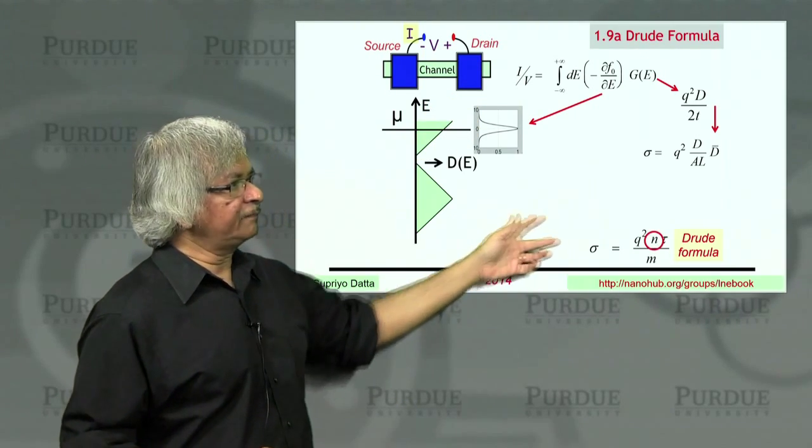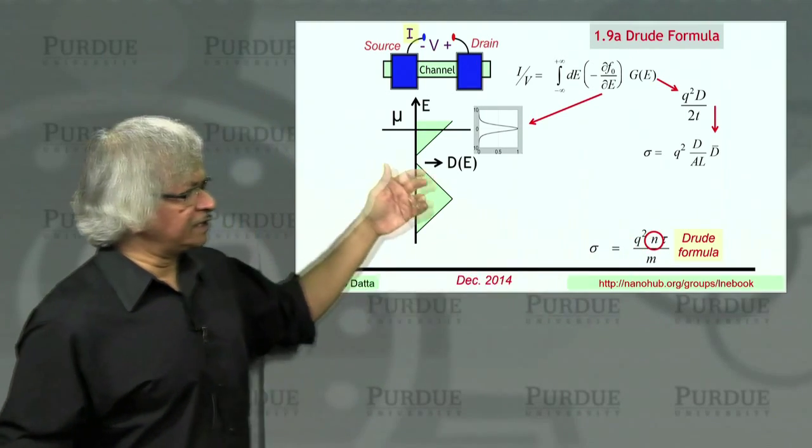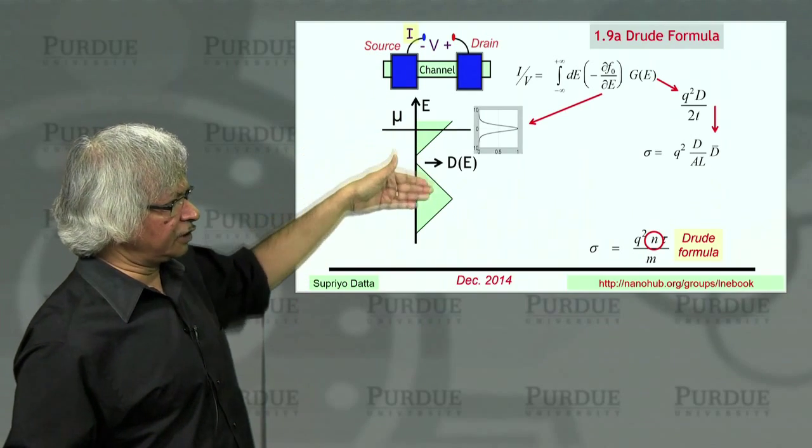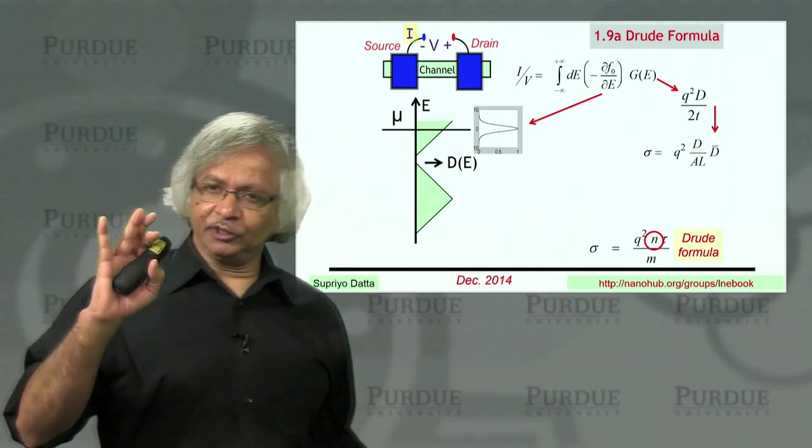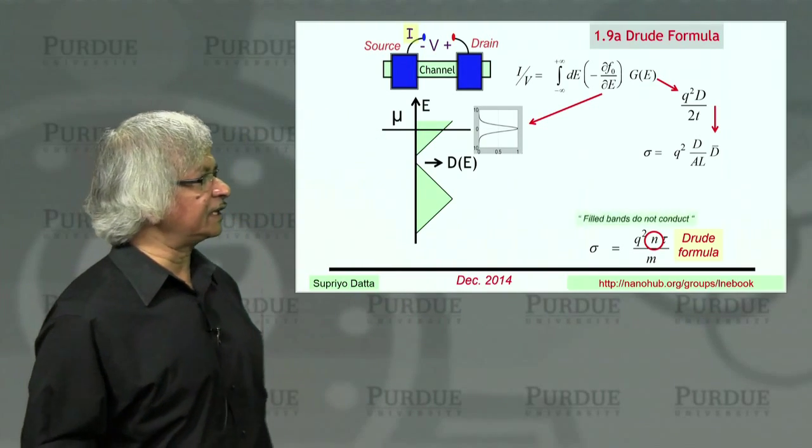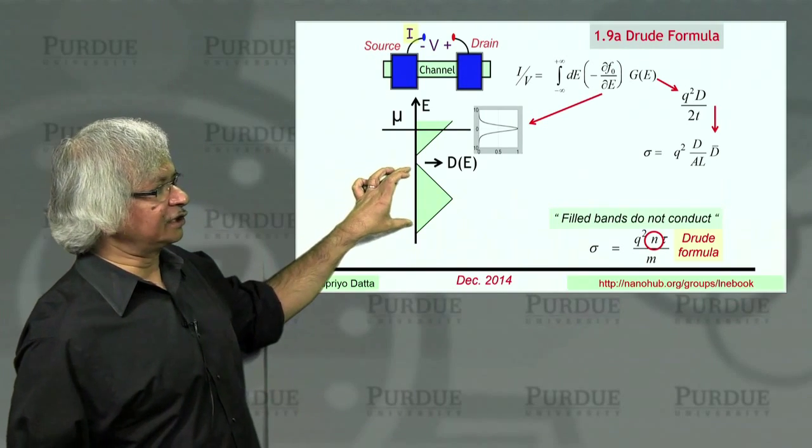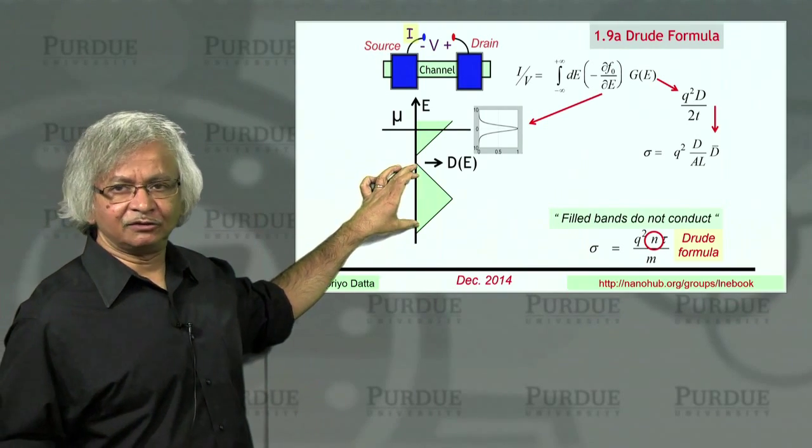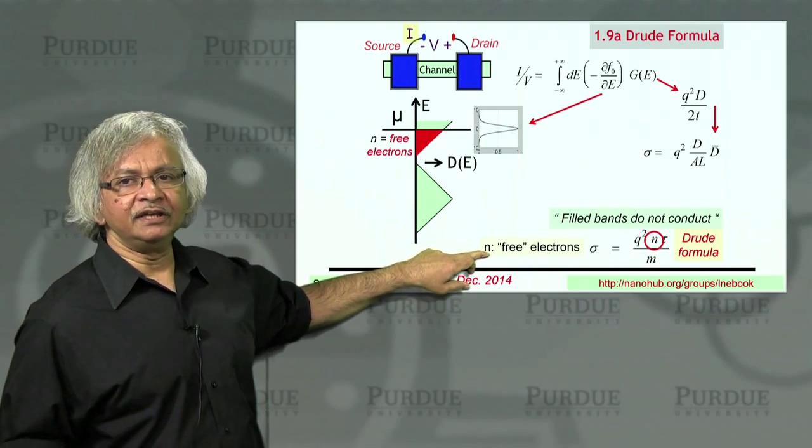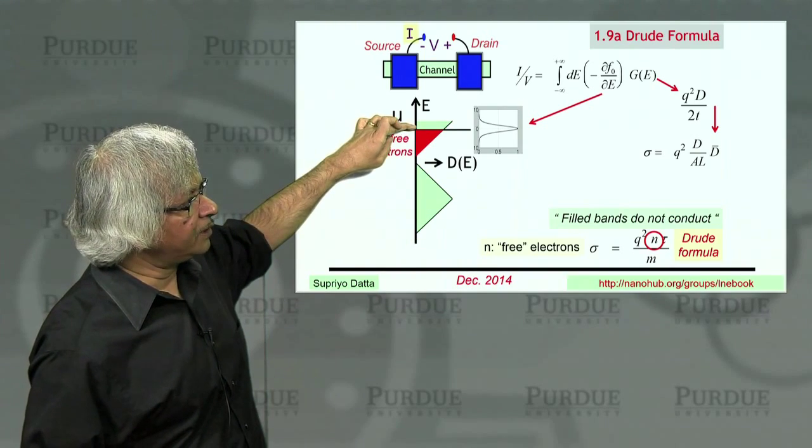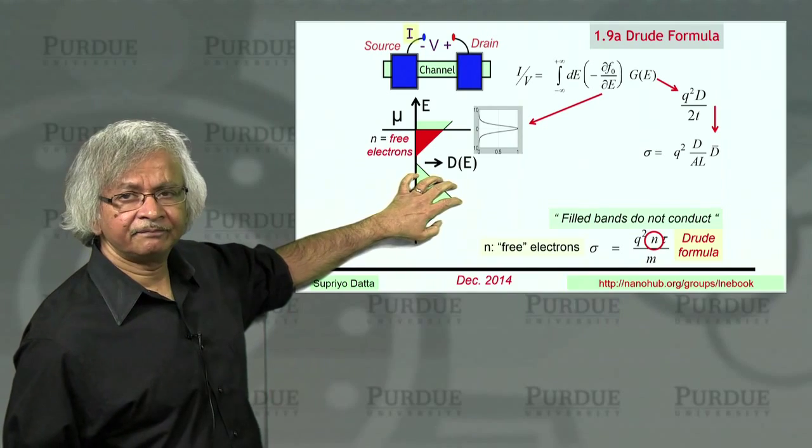Now, if you look at the Drude formula, you have something called this electron density, and often you might say, well, there's lots of electrons. You should probably be including everything, but that's not true. The way the Drude formula is applied, they say that this N is really the free electrons because filled bands do not conduct. So these are all filled bands that do not conduct at all. So what you should use is only the free electrons which go from here to here and stop right there. You don't count all this.